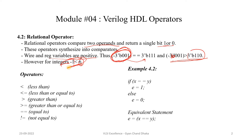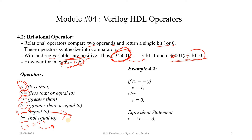Now let's see examples of relational operators. We have the less than operator, less than or equal to, greater than, greater than or equal to, equal to, and not equal to. We also have the triple-equals operator (===) which indicates that all values in the two operands are the same including unknown (x) and high impedance (z) values. With the double-equals (==) operator, if any unknown or high impedance value is present in either operand, the output will be unknown. But with the triple-equals (===), comparison also happens with respect to x and z values.